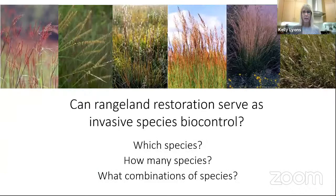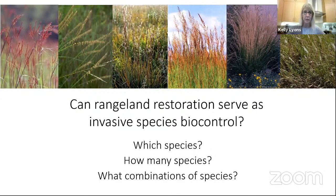The major experiment was driven by these questions: Can rangeland restoration serve as invasive species biocontrol? This was framed as a USDA grant for rangeland systems as potential forage. I wanted to know which species to use, how many species, which combinations, and — a later question — in what temporal order should you put them in?